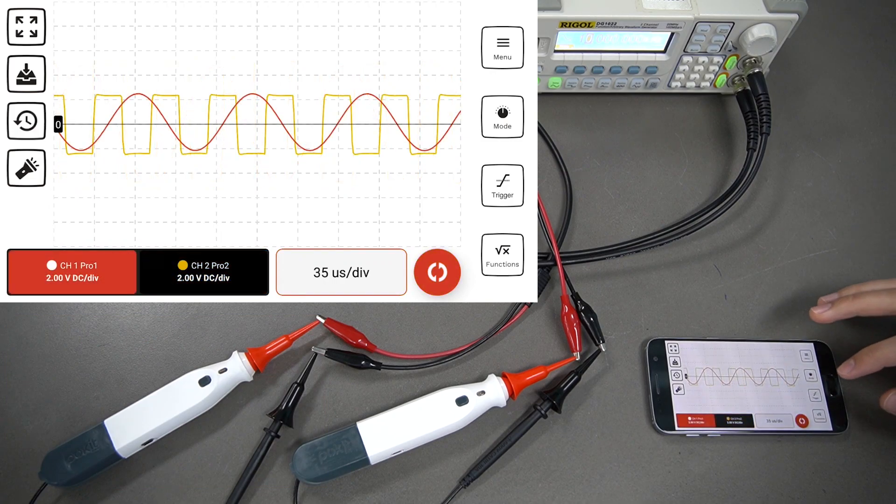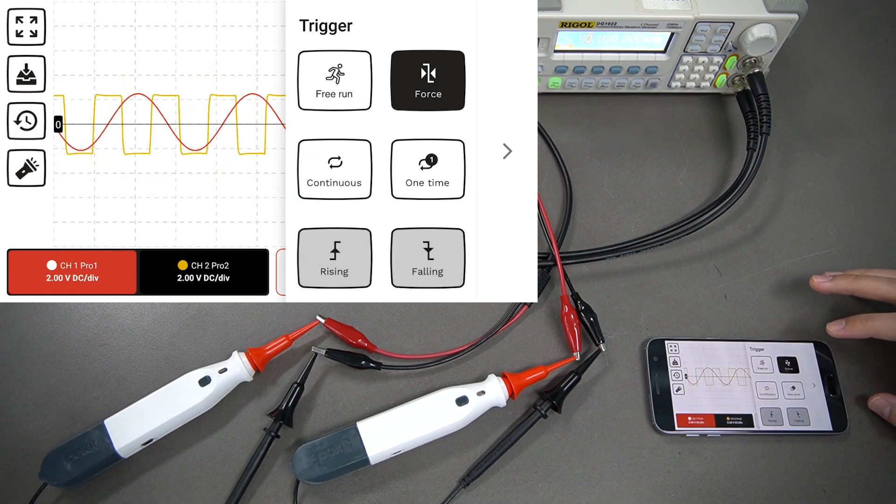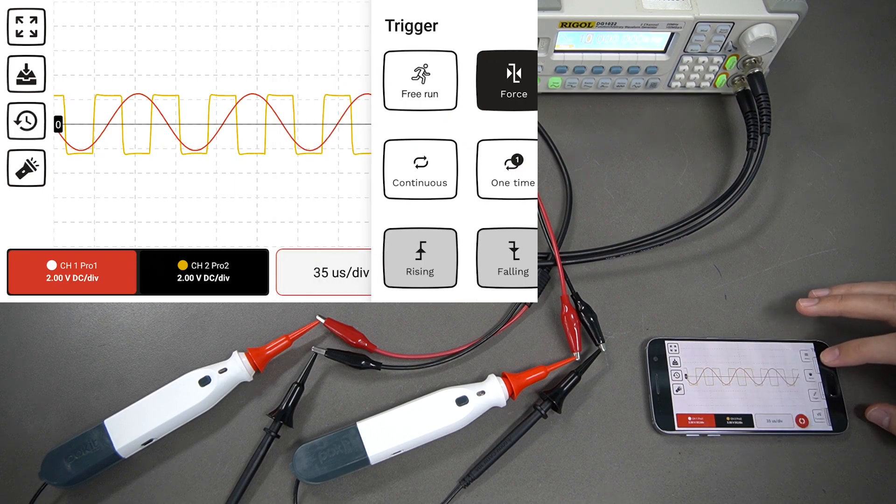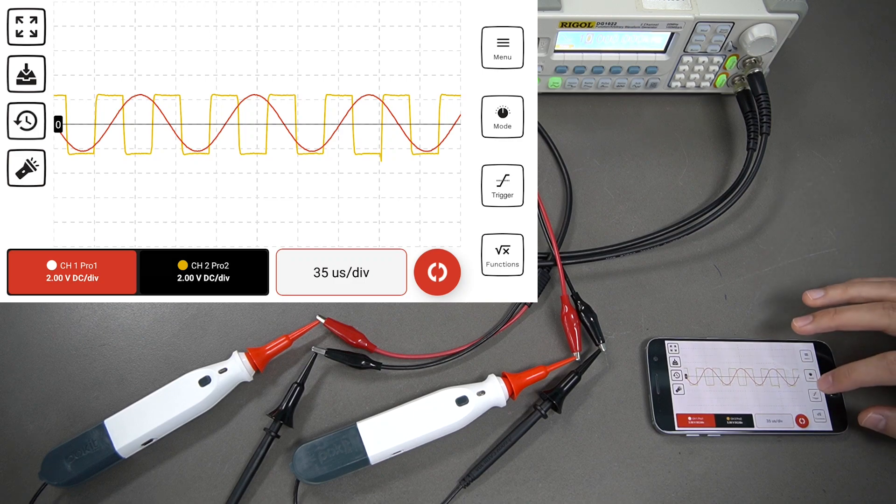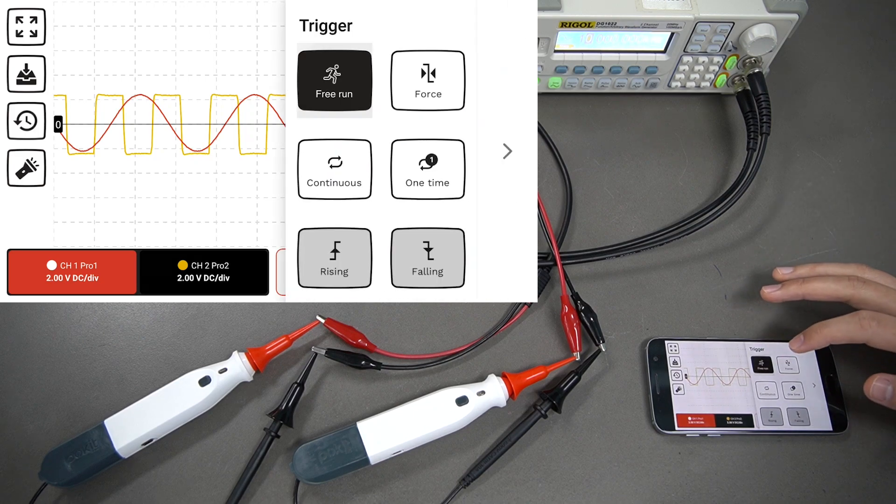Now let's take a look at the triggers. Press the trigger button over on the right here. I've currently got it in force mode. If you just press the button, it's going to give you one standard reading, essentially just like a snapshot.